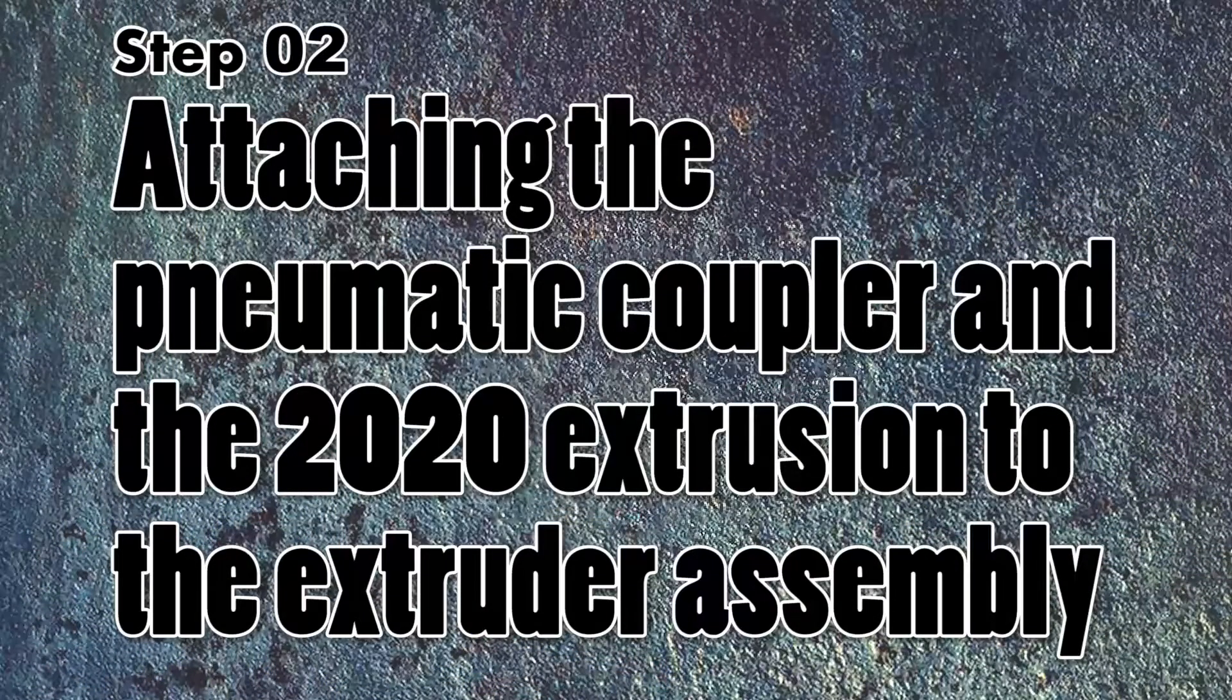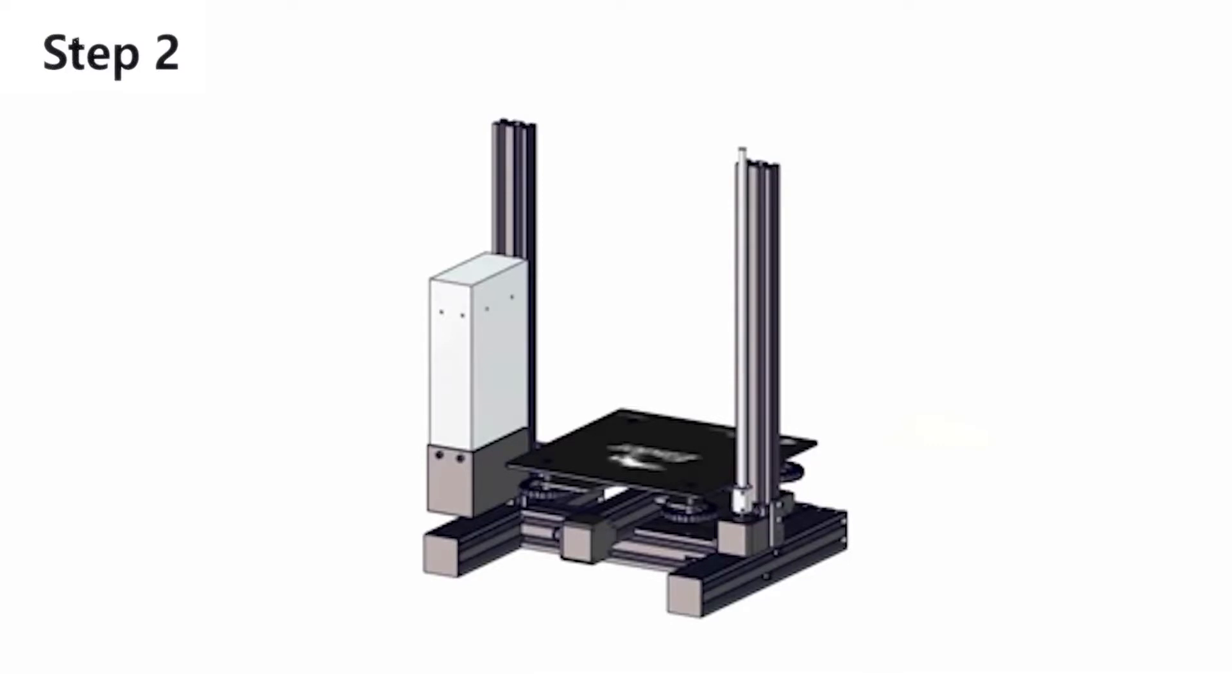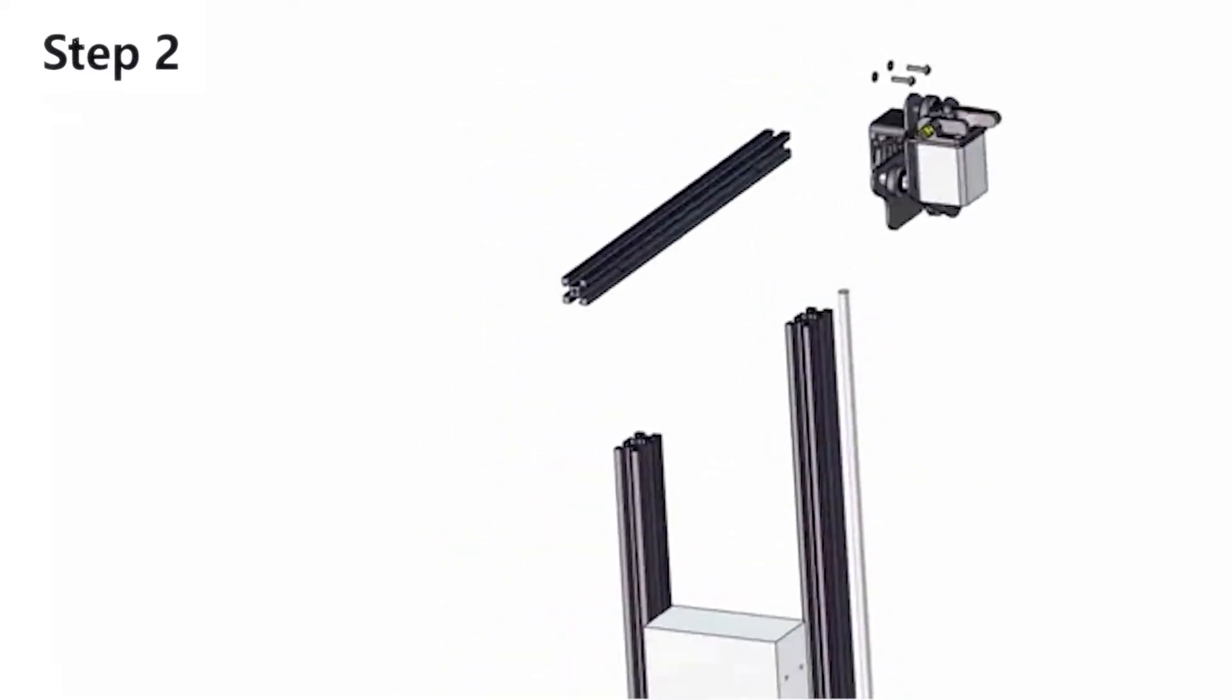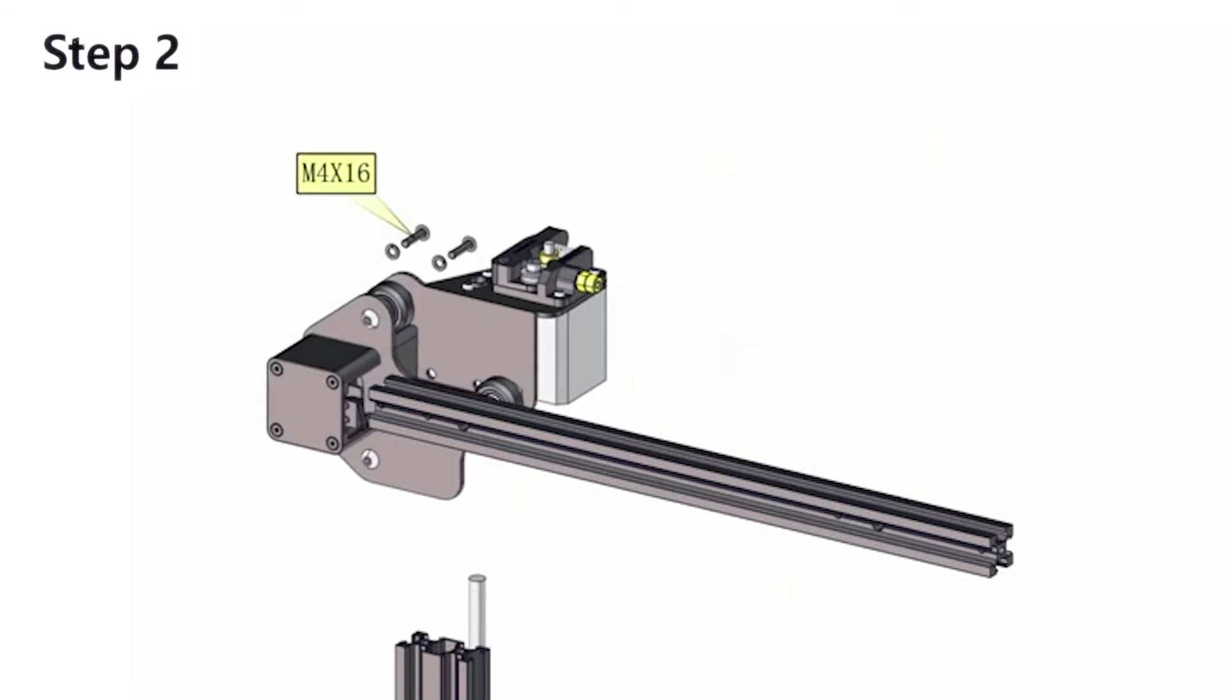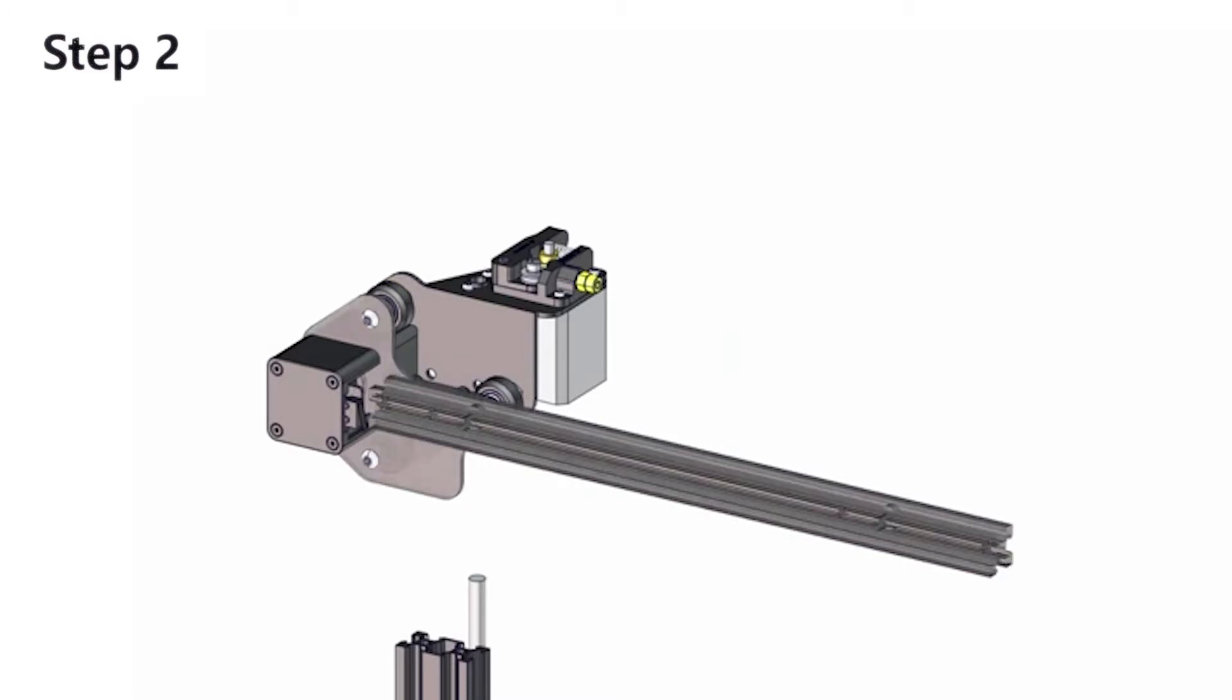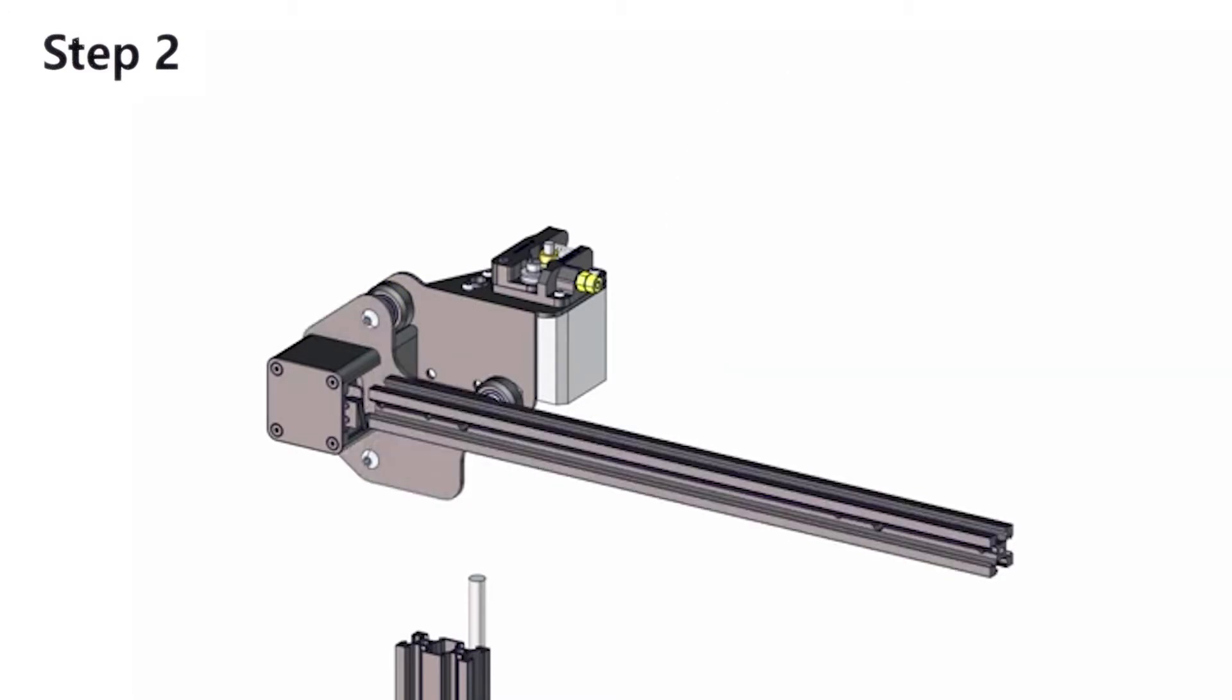On step 2, we will attach the pneumatic coupler and the 2040 aluminum extrusion to the extruder assembly. As you can see from the 3D animation, we are not going to be working on the base of the printer at the moment. We will actually be working on the extruder assembly on which we are going to attach one of the 2020 aluminum extrusion.